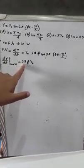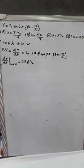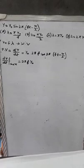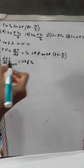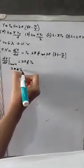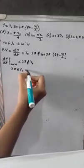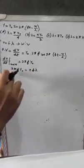The maximum particle velocity, dy/dt max, comes out as 2πfy₀ — just think of the math. Now the question states that the maximum particle velocity is equal to four times the wave velocity. So I can write this condition mathematically.